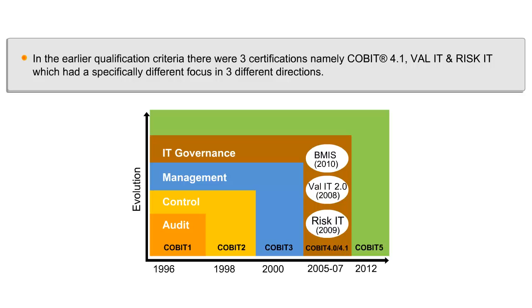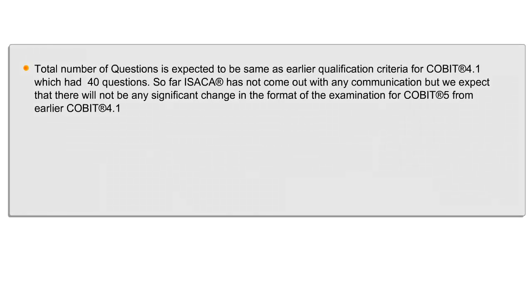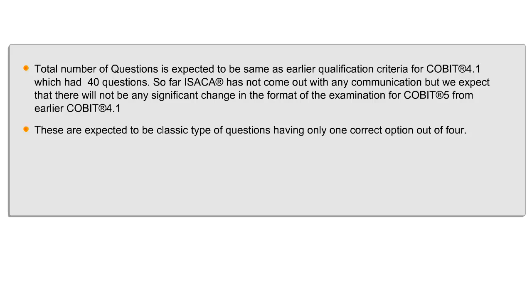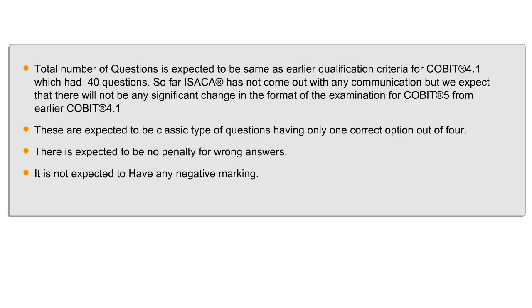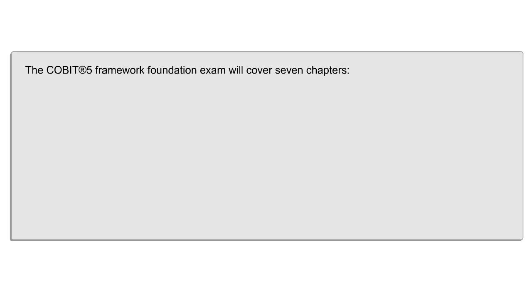Here are the details of the COBIT 5 Foundation exam and its format. The total number of questions is expected to be the same as the earlier qualification criteria for COBIT 4.1, which had 40 questions. So far ISACA has not issued any formal communication, but we expect there will not be any significant change in the format of the examination. These are expected to be classic multiple-choice questions with only one correct option out of four, no unmarked questions, and no negative marking.